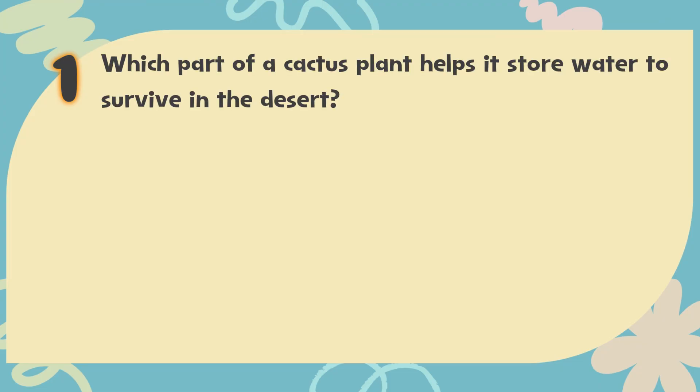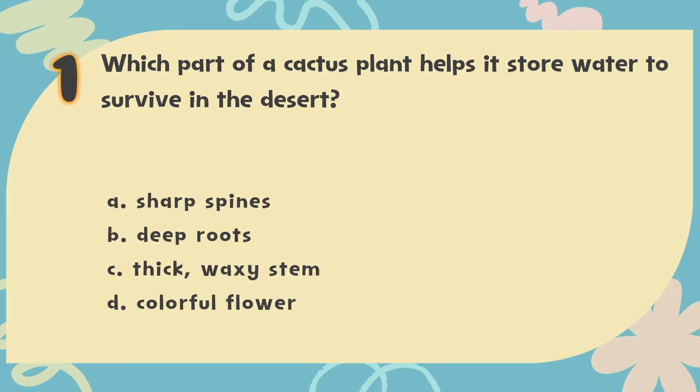Number 1. Which part of a cactus plant helps it store water to survive in the desert? The choices are: A. Sharp Spines, B. Deep Roots, C. Thick Waxy Stem, D. Colorful Flower.